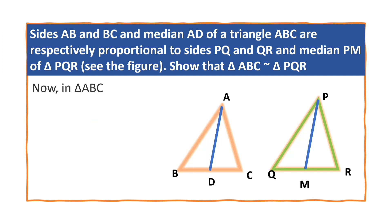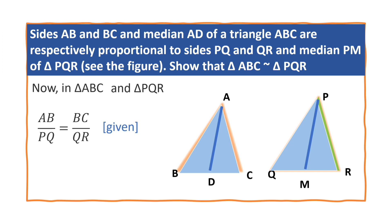In triangle ABC and triangle PQR, we have AB by PQ is equal to BC by QR. It is given. And angle ABC is equal to angle PQR. Why? Triangle ABD is similar to triangle PQM. Just now we have proved. So, according to side angle side criterion, we can say that triangle ABC is similar to triangle PQR by SAS criterion.